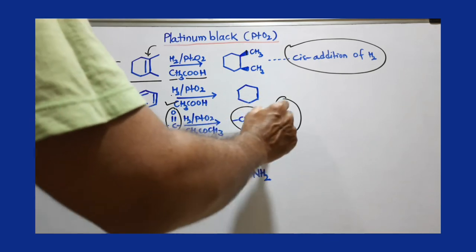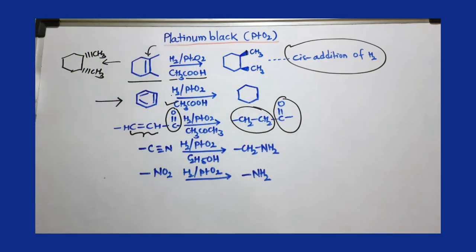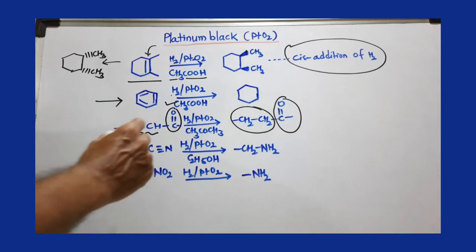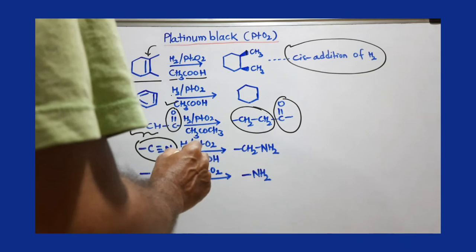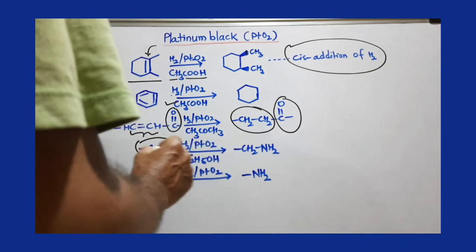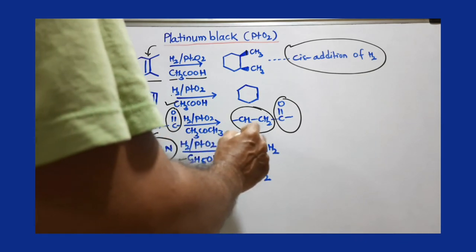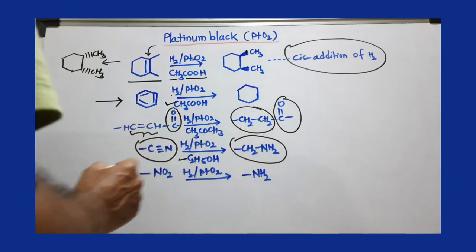Cyanide group can be reduced by using platinum black and hydrogen in presence of methanol. This is converted to CH2NH2. Always, if a cyanide group is reduced, we get CH2NH2. You should always remember this.